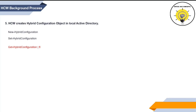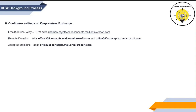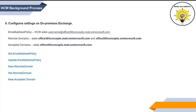The next step that HCW performs is it adds the username@domain.mail.onmicrosoft.com address in the email address policy on on-premise Exchange. Then it adds domain.mail.onmicrosoft.com and domain.onmicrosoft.com domains in remote domains, and adds domain.mail.onmicrosoft.com in accepted domains. To configure these settings, HCW executes Set-EmailAddressPolicy, Update-EmailAddressPolicy, New-RemoteDomain, Set-RemoteDomain, and New-AcceptedDomain commands.